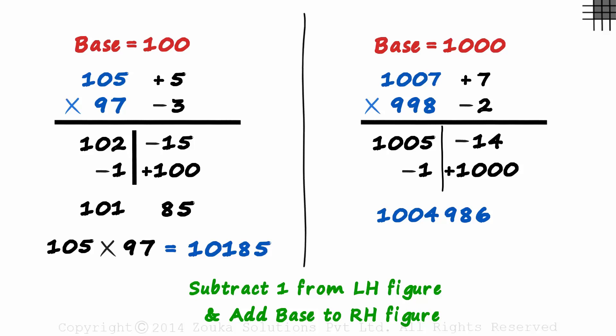But have you noticed something? In all our examples till date, we have chosen the base as a multiple of 10. 10, 100, 1000 and so on. But what if the numbers are something like this? 397 times 399. Here both the numbers are close to 400. Can we choose 400 as the base?